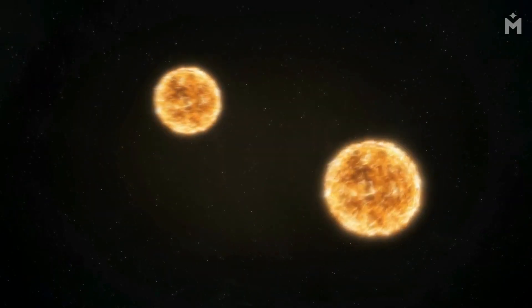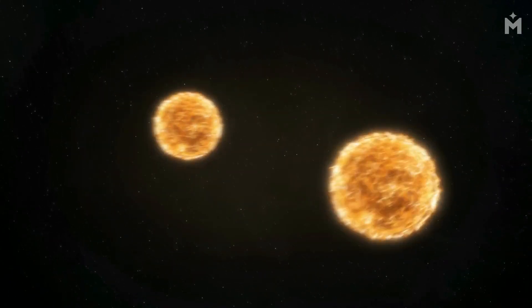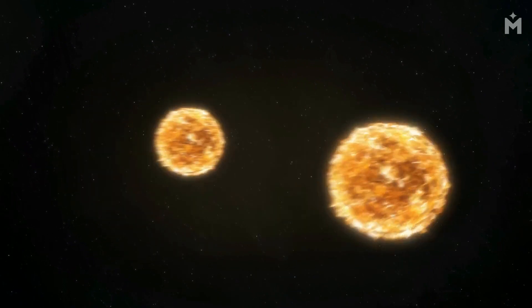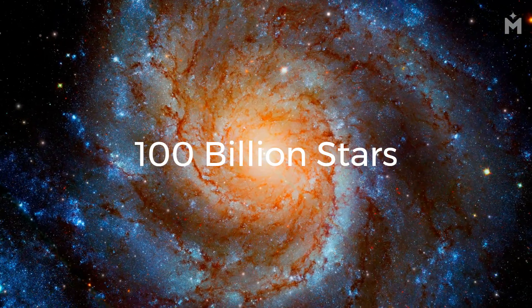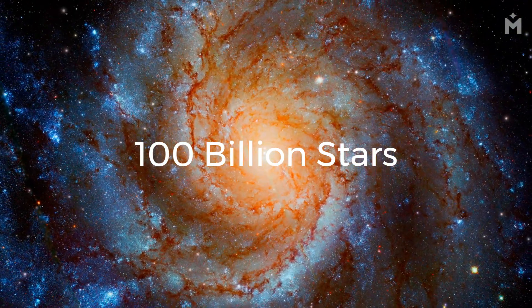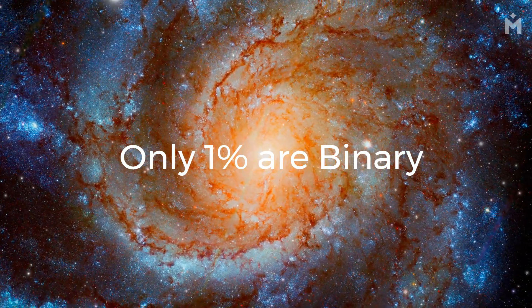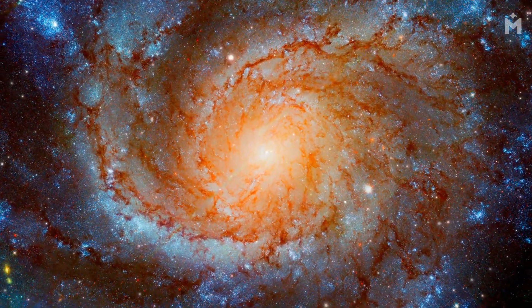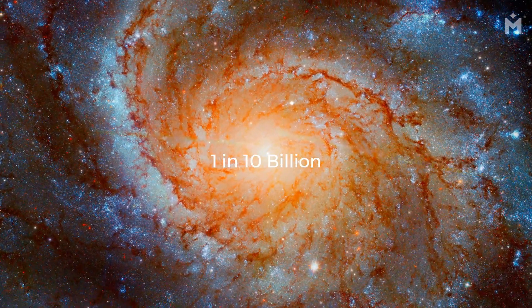The odds of a star being part of a binary system and its companion star wandering too close to the black hole are even lower. This is because binary systems are relatively rare. In our galaxy, there are an estimated 100 billion stars, but only about 1% of those are in binary systems. So, the odds of any one star being part of a binary system and its companion star wandering too close to the black hole are about 1 in 10 billion.